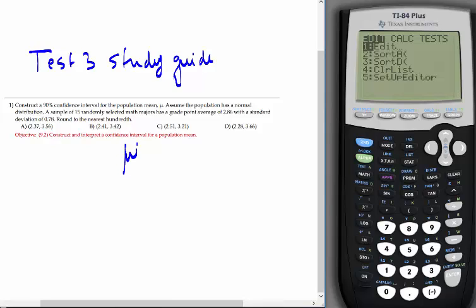Assume the population has normal distribution. A sample of 15 randomly selected math majors, so n=15, has a grade point average of 2.86, so x-bar is 2.86, with a standard deviation of 0.78, so s=0.78. We want a 90% confidence interval. Round to the nearest hundredth. This is a multiple choice question, we're going to select the correct answer.